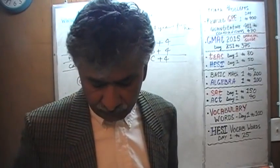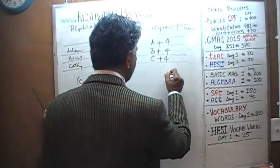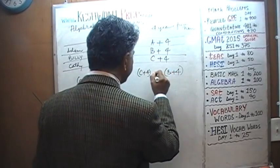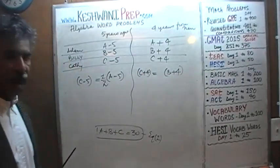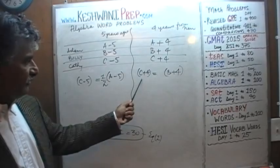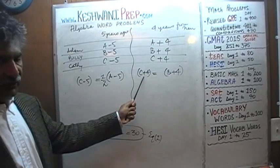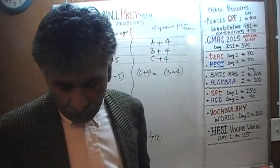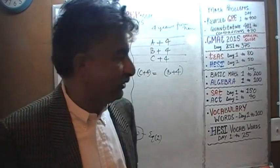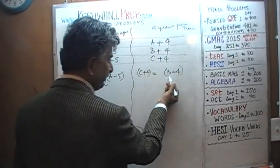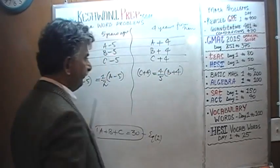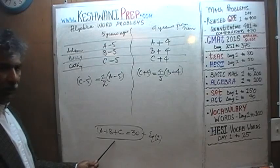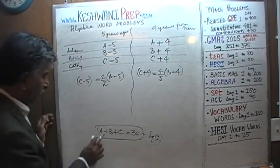For equation three, four years from now: Cathy will be C plus 4 and Billy will be B plus 4. Again, writing C plus 4 equals B plus 4 would be wrong — that says she's the same age as Billy. We're told she'll be four-fifths of Billy's age, so: C plus 4 equals four-fifths times (B plus 4). That's our equation three.